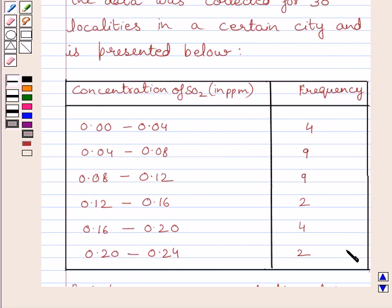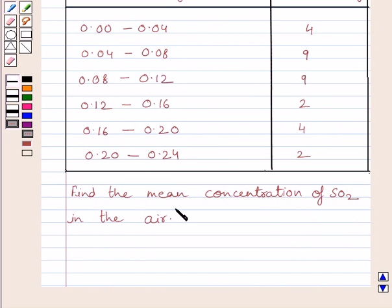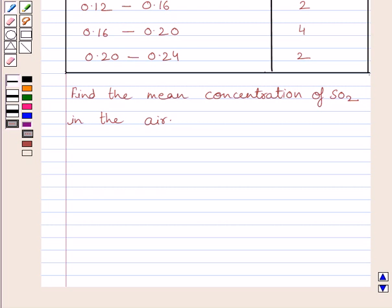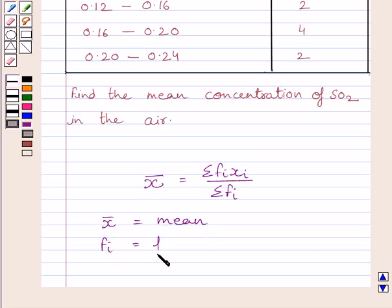This is the given data. Find the mean concentration of sulfur dioxide in the air. First of all, let us know that according to direct method, mean is equal to summation fi×xi upon summation fi, where x̄ is mean, fi is frequency,